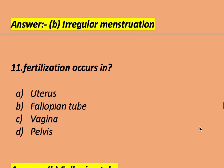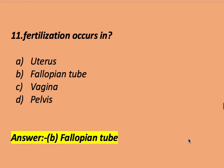Fertilization occurs in: the uterus, fallopian tube, vagina, or vulva. The right answer is fallopian tube. Fertilization occurs in the fallopian tube.